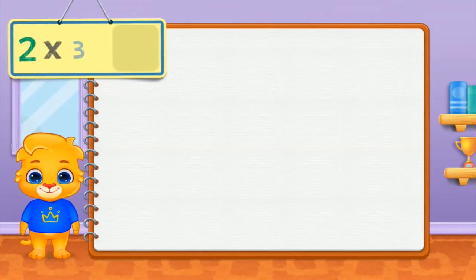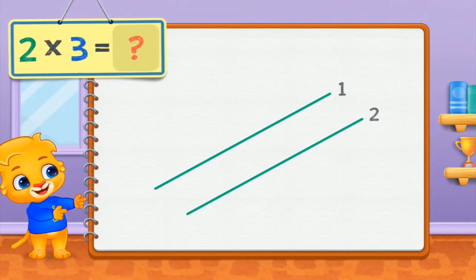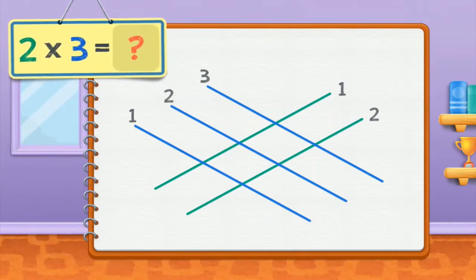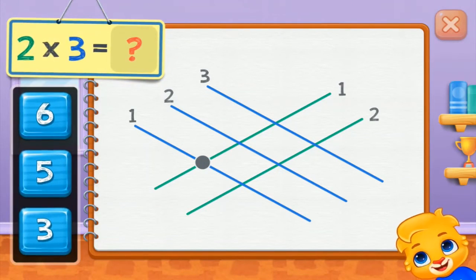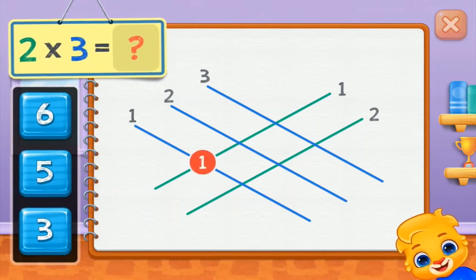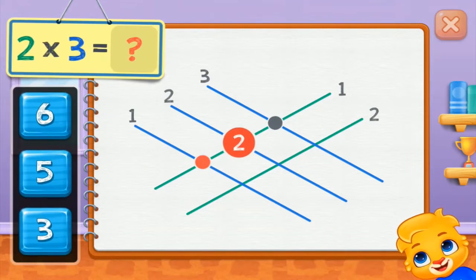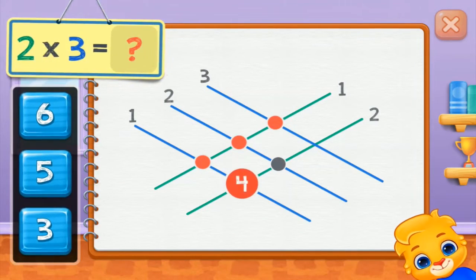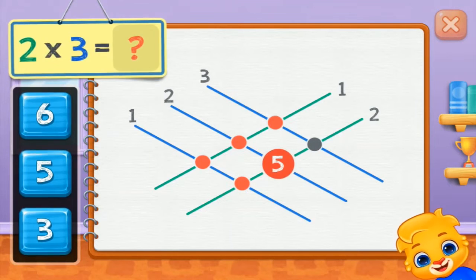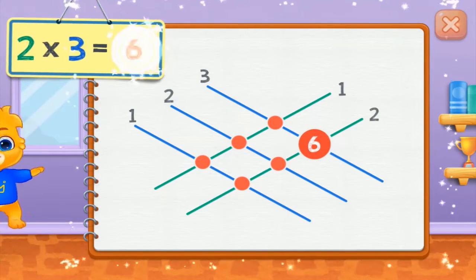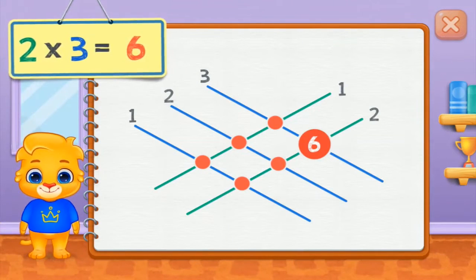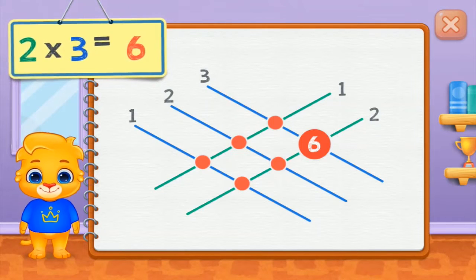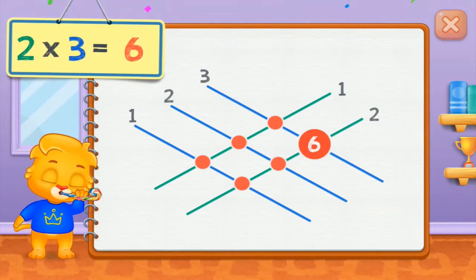2 times 3 equals... 1, 2, 3, 4, 5, 6. 2 times 3 equals 6.